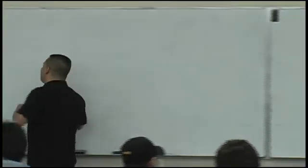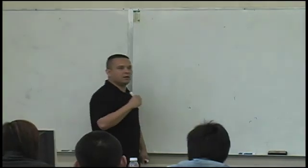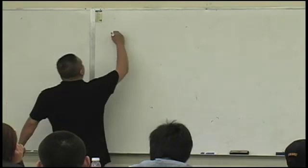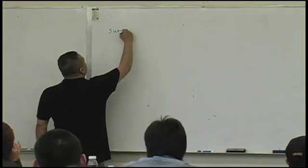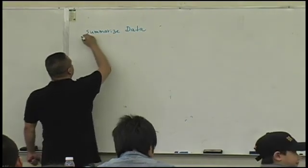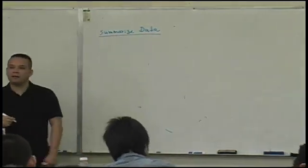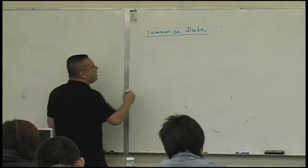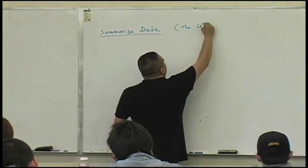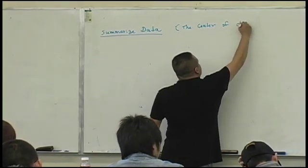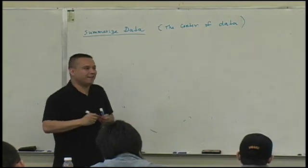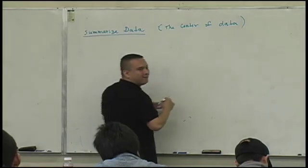All right. What we've done so far is we have gathered data. We've organized data. We've drawn pictures of data. We're going to now summarize our data. We're going to summarize data. And when we summarize data, we're really talking about what's known as the center of our data. So, the irony is the center, there's three different types of centers. So, that's unfortunate.